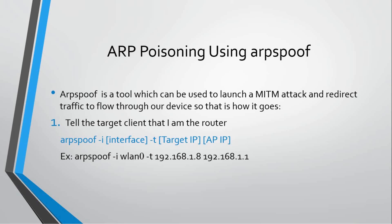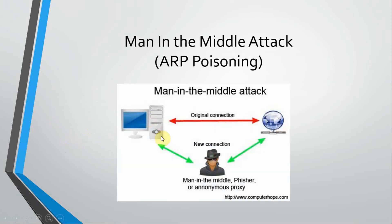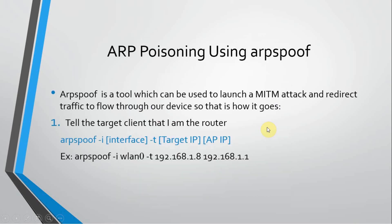There are three things we need to do in order to spoof the IP. First, we are going to tell the target client that I am the router. Then we are going to tell the router that I am the device, and then tell the device that I am the router.